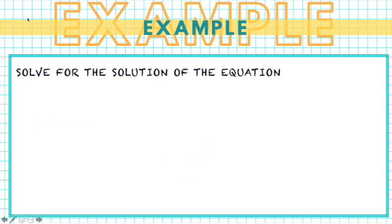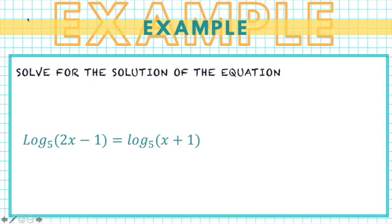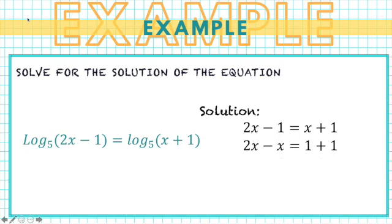For another example, we have: logarithm of (2x minus 1) to the base 5 equals logarithm of (x plus 1) to the base 5. Since both logarithms have the same base, we can equate the powers and drop the logarithm: 2x minus 1 equals x plus 1. Transposing, we get 2x minus x equals 1 plus 1, therefore x equals 2.